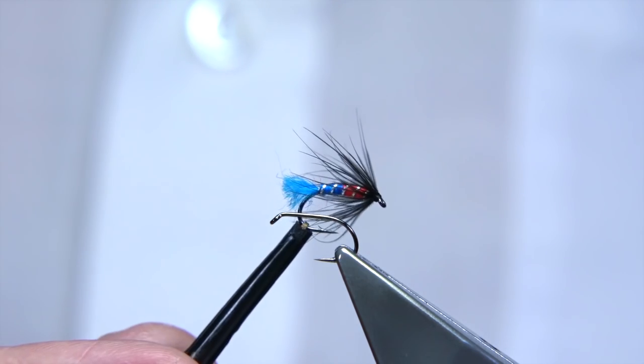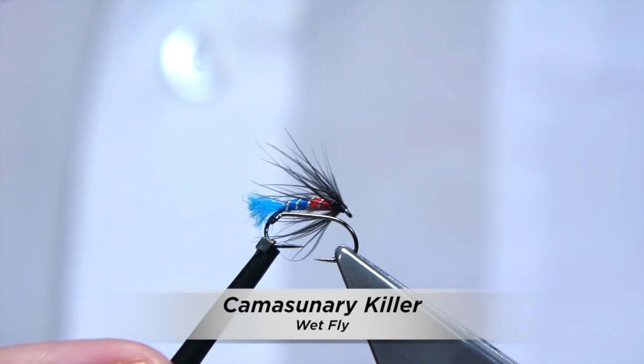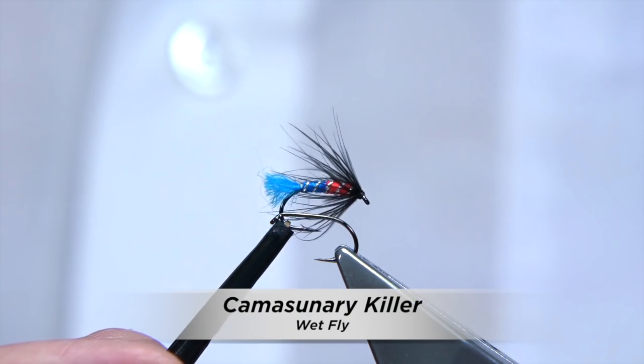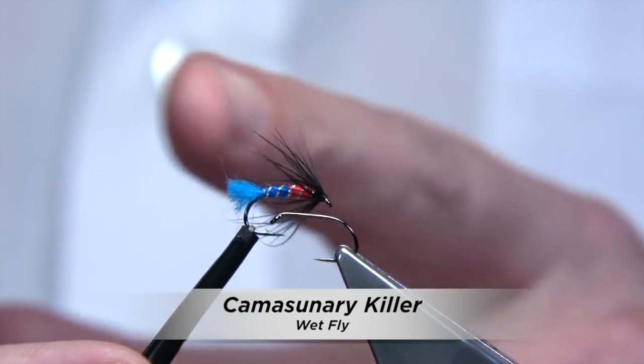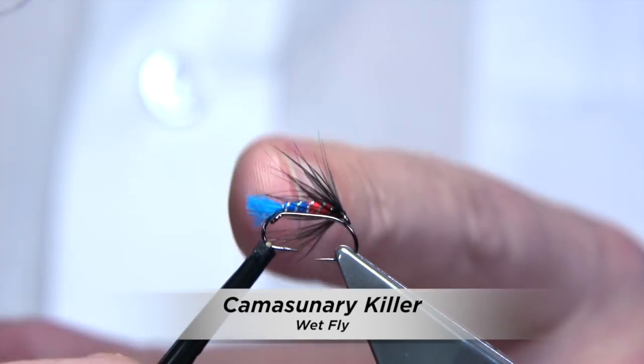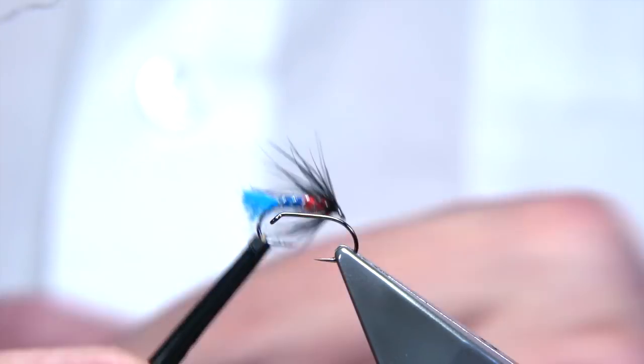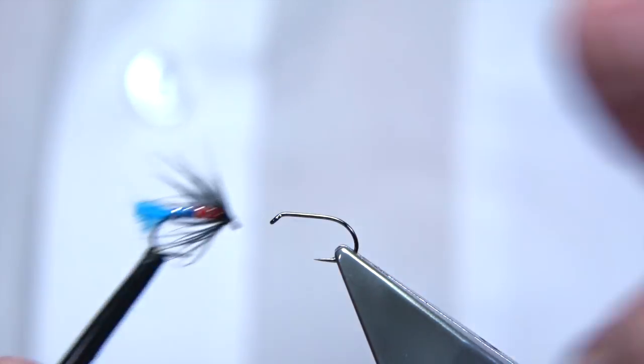Now, I'm going to be tying this fly here. This is what they call a Camusuneri Killer. It's a very simple wet fly, originally tied for sea trout, but it's a very good brown trout fly as well. It's depending on the size that you tie it.